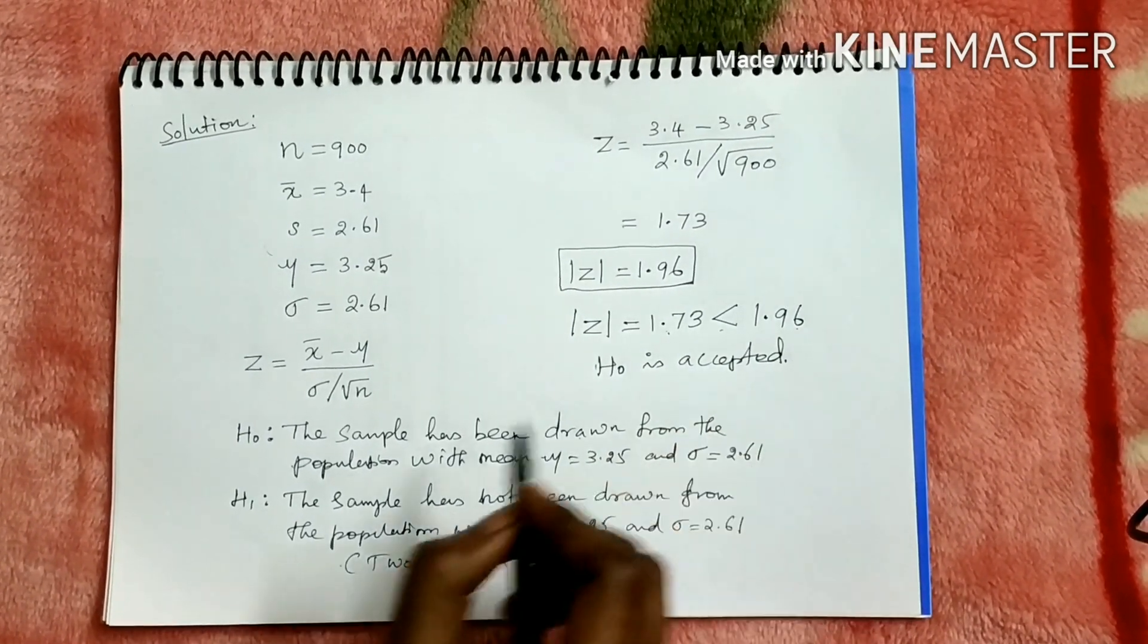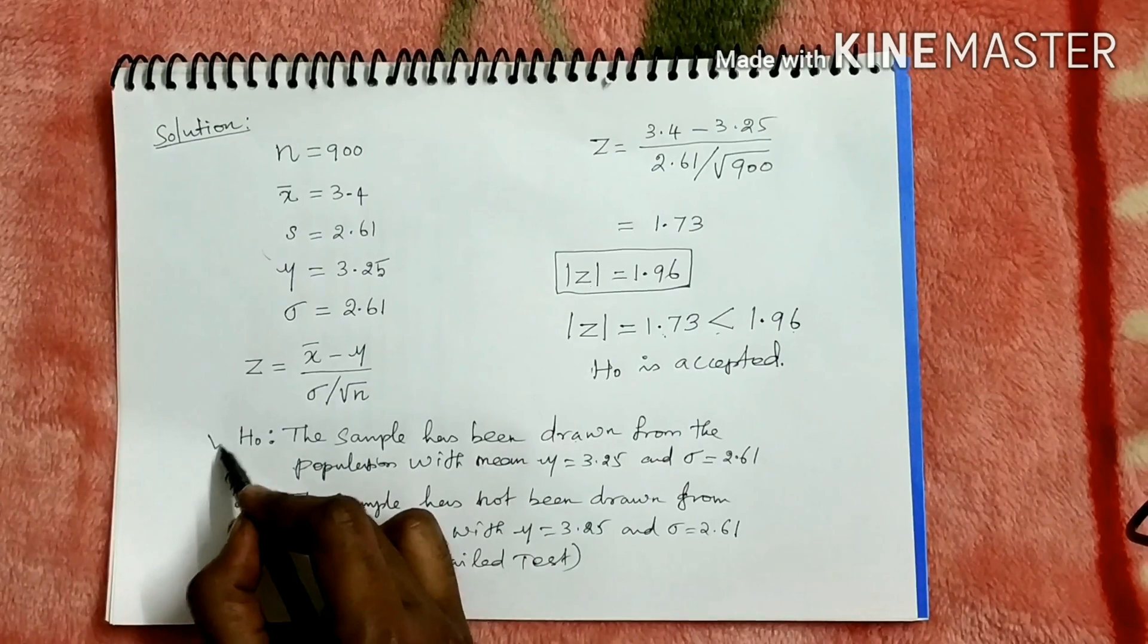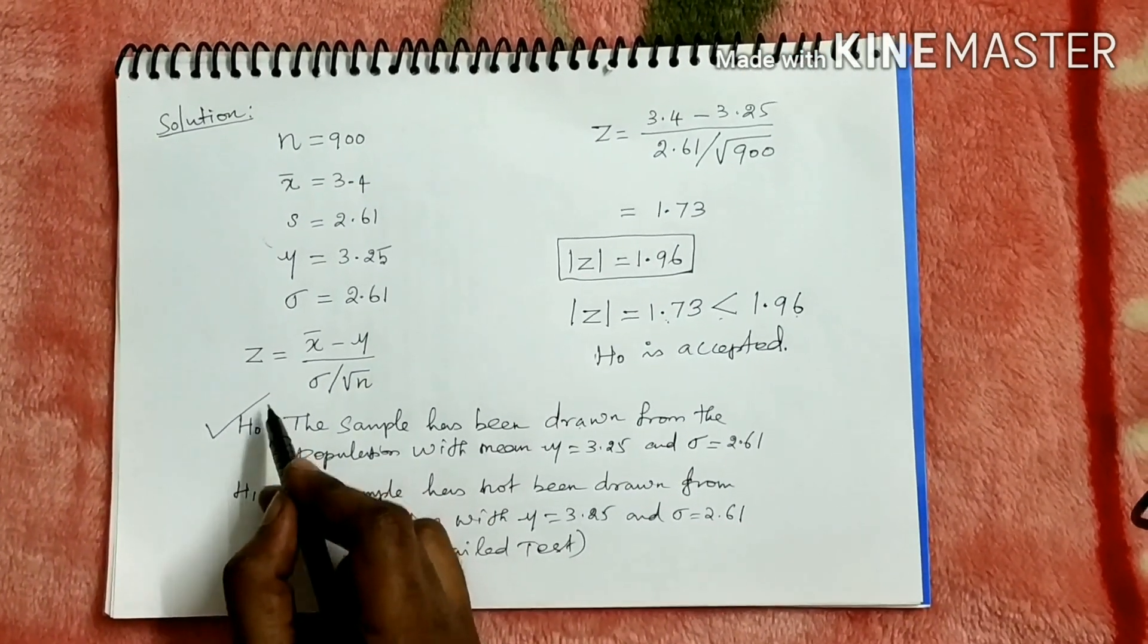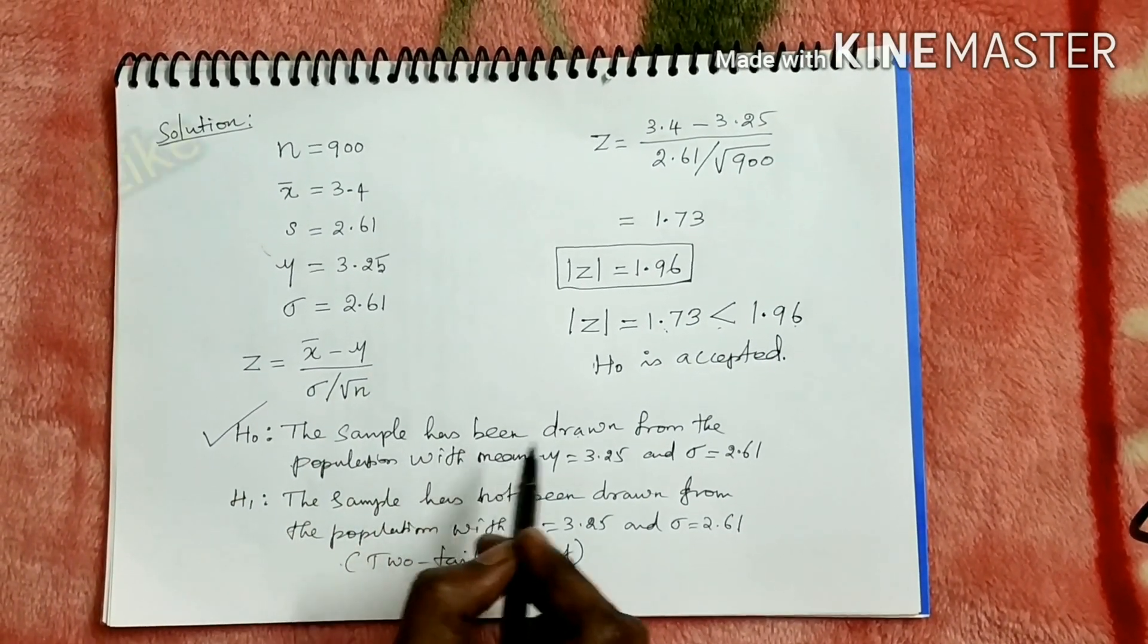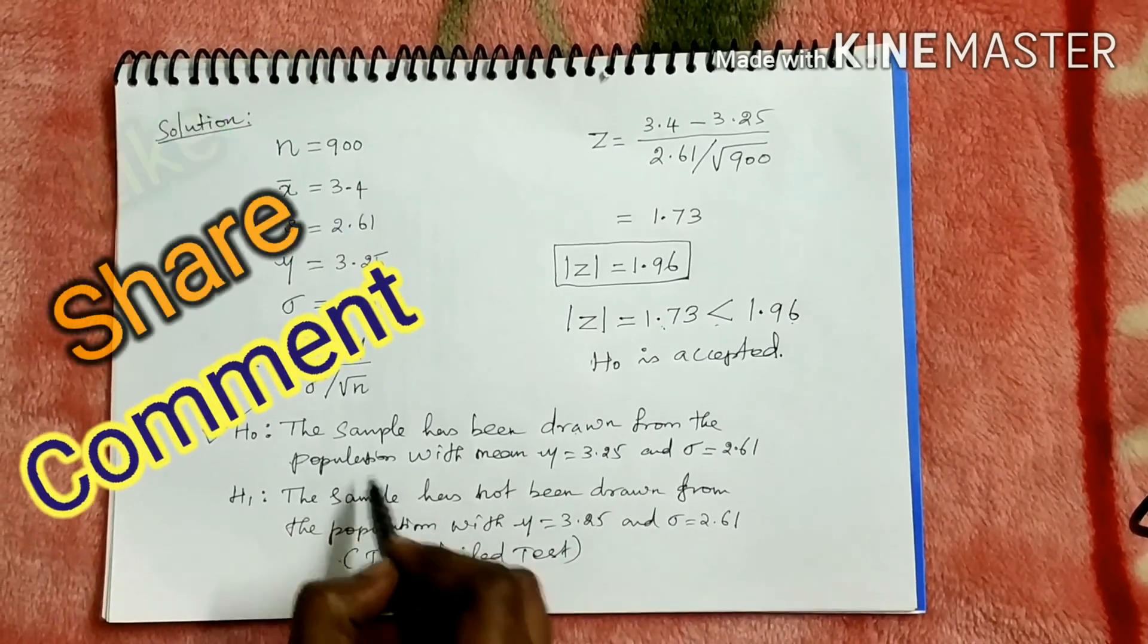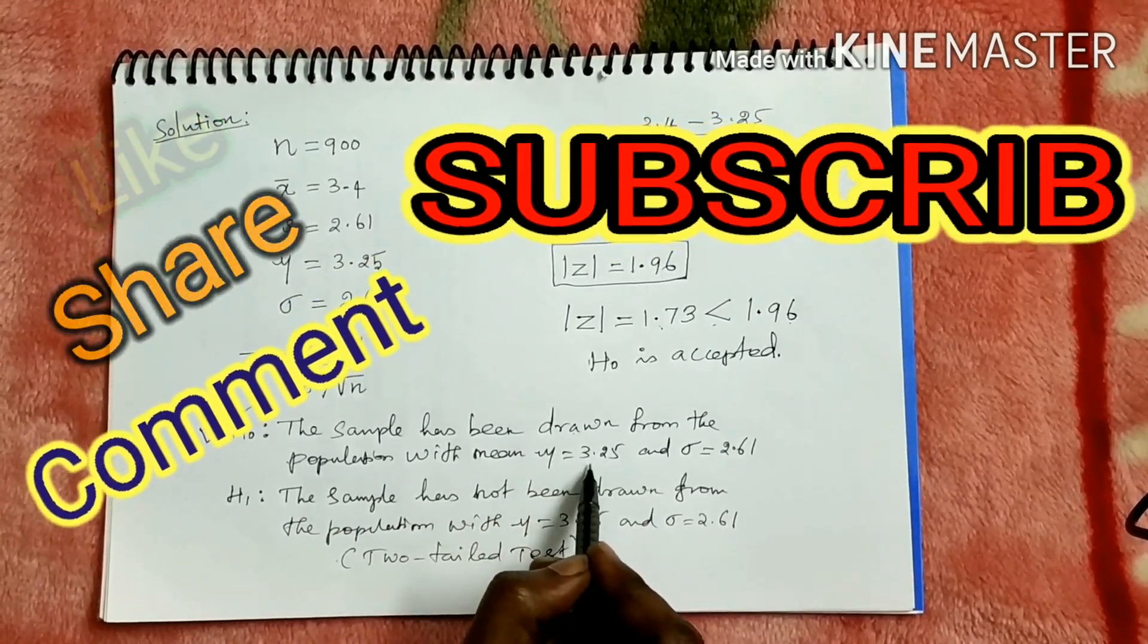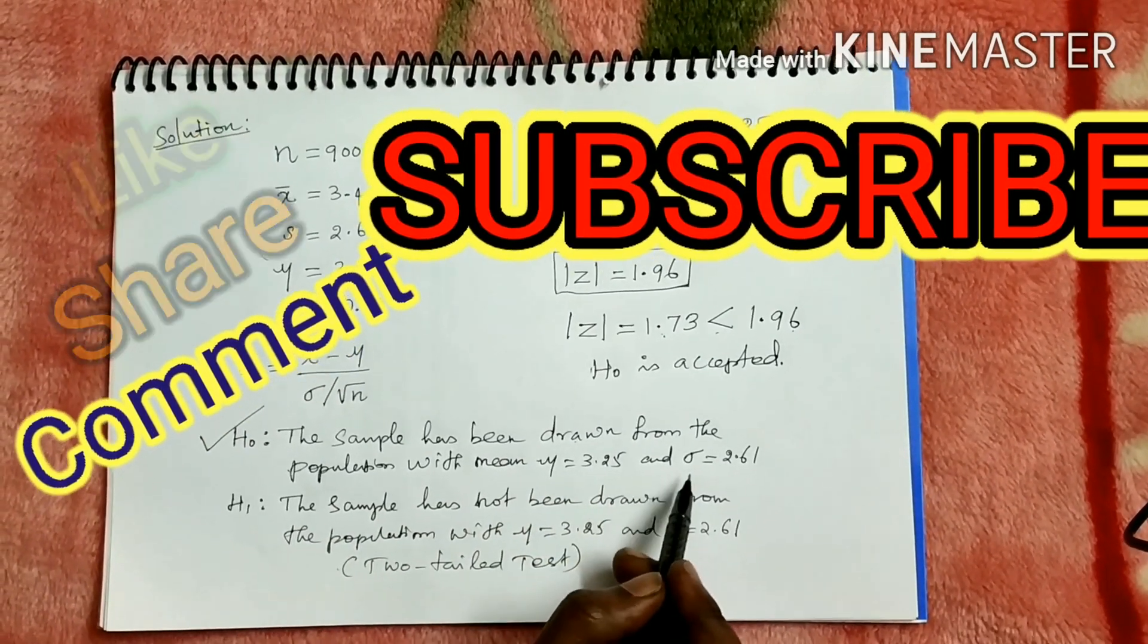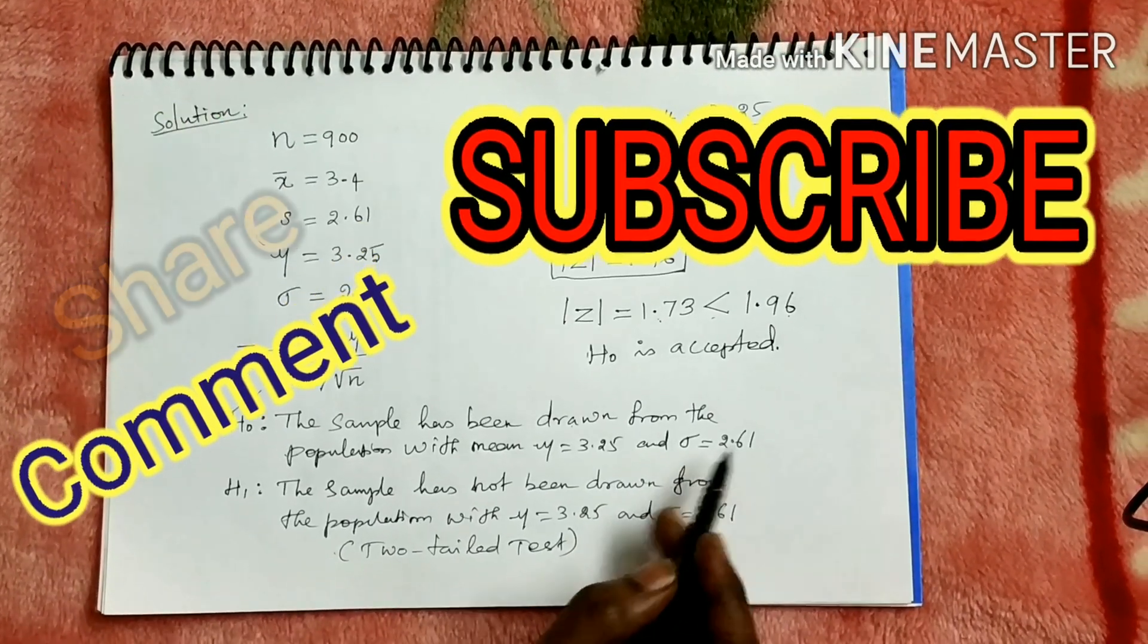Therefore the conclusion is H0, the null hypothesis is true. The sample has been drawn from the population with mean 3.25 and standard deviation 2.61. Thank you.